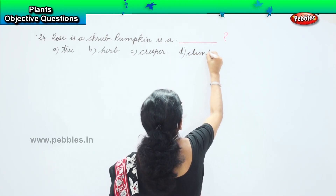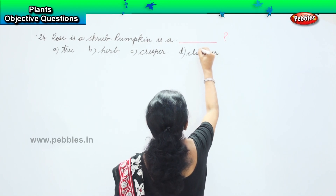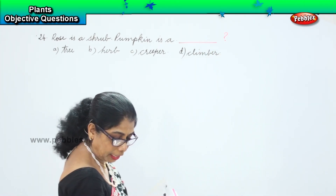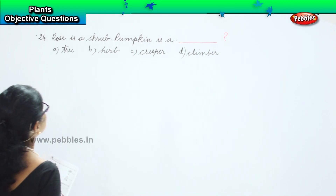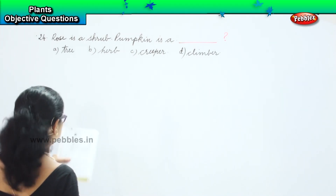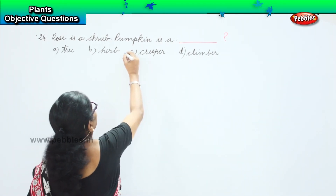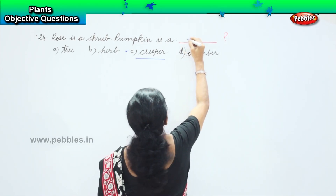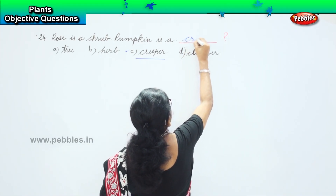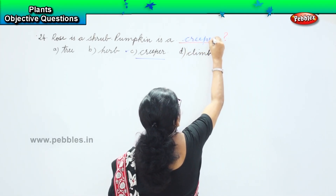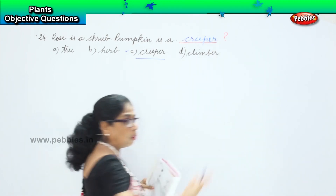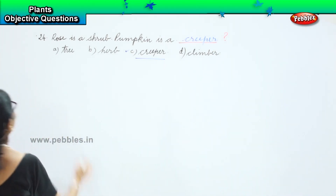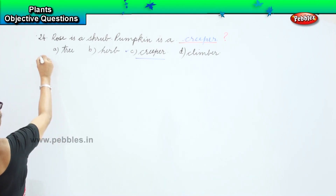Now which option is correct? If rose is a shrub, pumpkin is a creeper — it runs on the ground, it creeps on the ground. That's the twenty-fourth question answered.